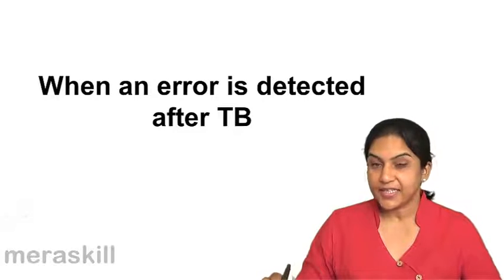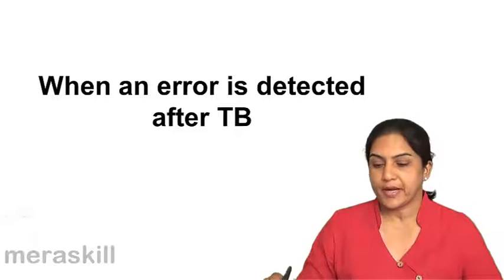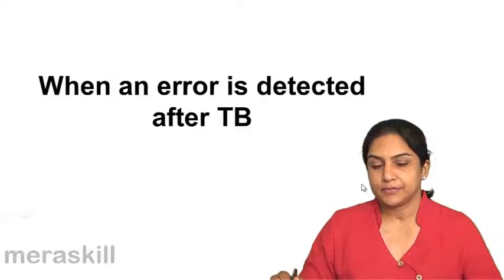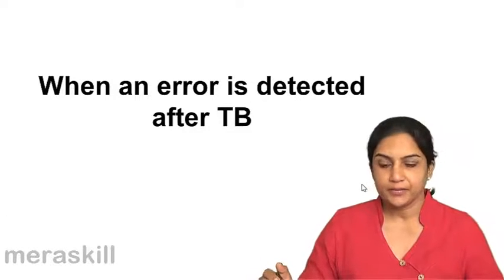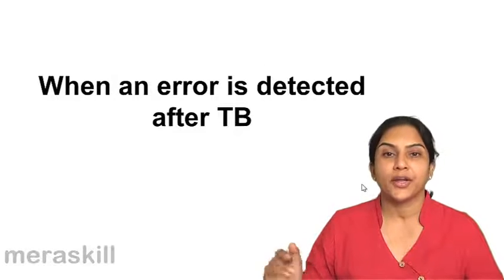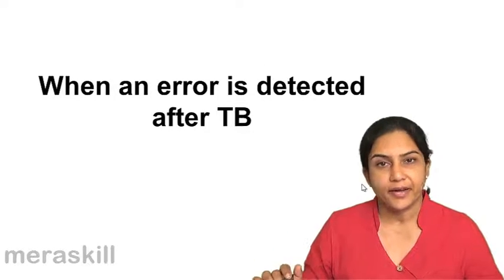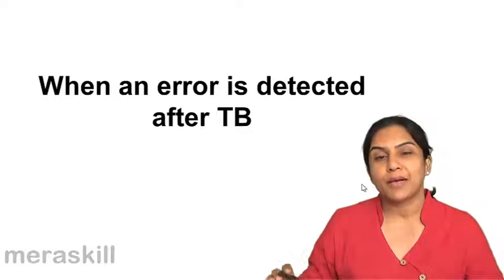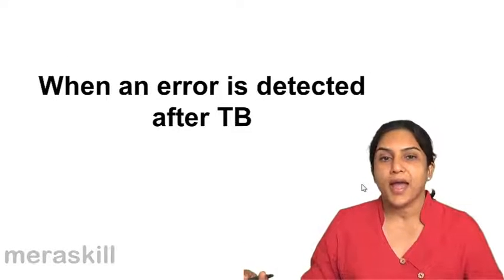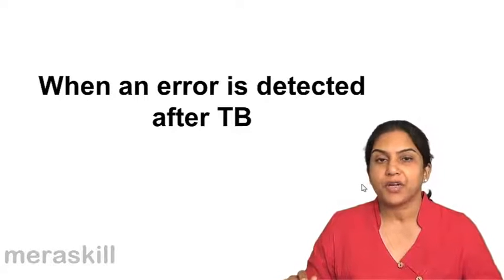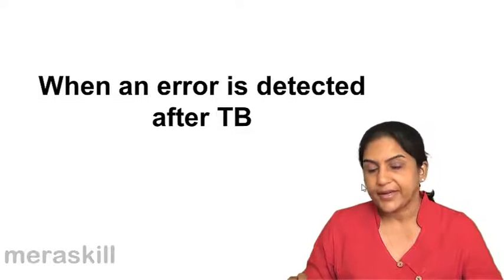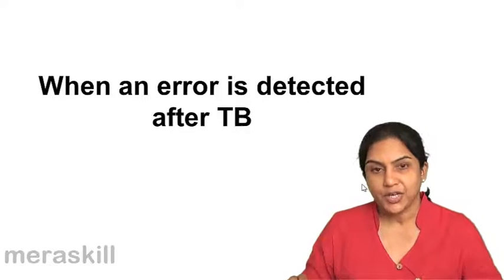When an error is detected after trial balance — we prepare a trial balance, the trial balance does not agree, but we are not able to locate the error now. We tried, maybe we found some errors, but the trial balance is still not agreeing. We have not detected all the errors and we want to move on and prepare our final accounts — profit and loss, balance sheet. In that case, how would we pass a rectification entry?